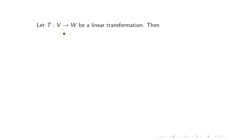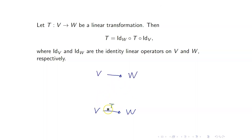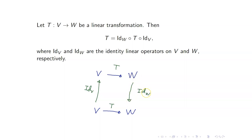The matrix representation of the composition is just equal to the product of the matrix representations. Now, suppose that we have a linear transformation from V to W. Then we can write this linear transformation as the composition of itself with the identity linear operators on V and W. So here I have the identity linear operator from V to V, then T, and then from W to W, the identity linear operator on W.